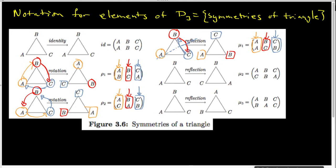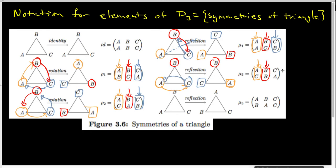For our second reflection, A starts here and lands here, so A went to the C spot — that's what this first column indicates. B starts here and lands here, so B stayed in the B slot, and that's what this particular column indicates. And finally C starts here and lands there, so C went into the A slot, and that's what this column indicates. This is indeed a reflection across the line of symmetry that runs from B to the middle of the opposite side.